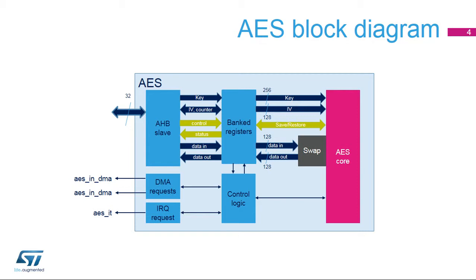One DMA channel is for writing data to the AES, the second to read the result. Software can suspend a message if the AES needs to process another message with a higher priority, then resume the original message.